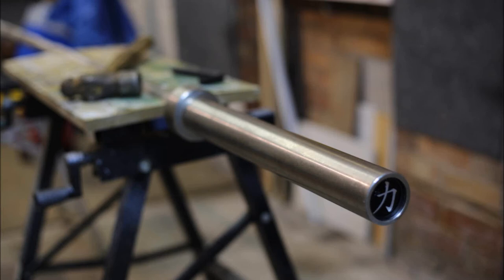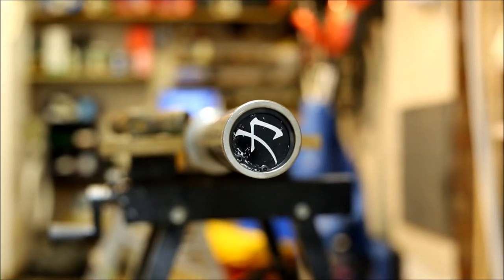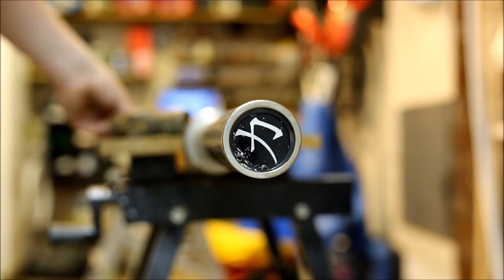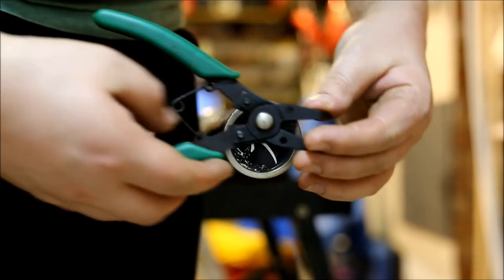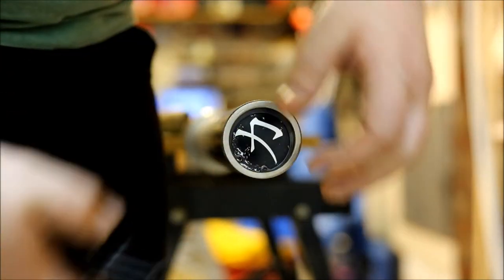What we're looking at here is a Strength Shop Bastard Power Bar. It's a fairly pricey bar, cost me about £260. It's very stiff, quite nice, very heavily knurled. I really like it for bench presses and squats.